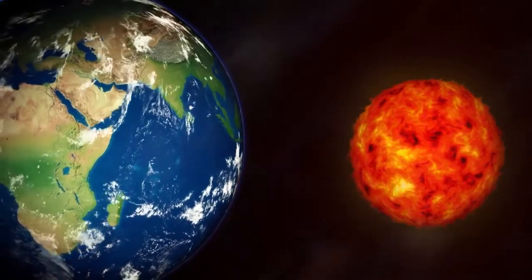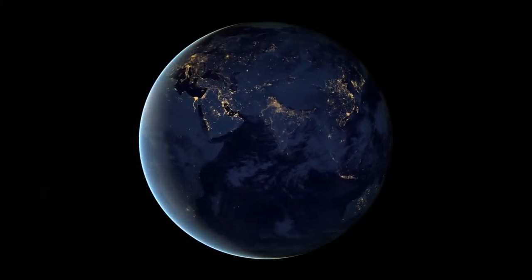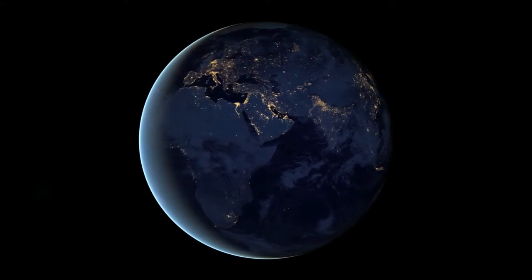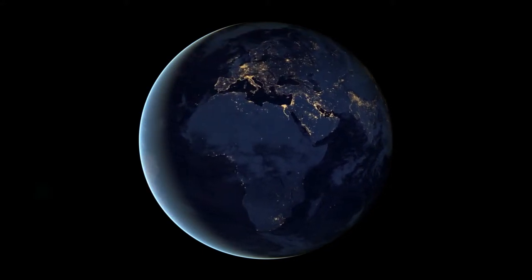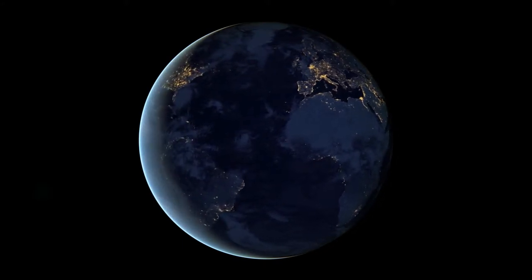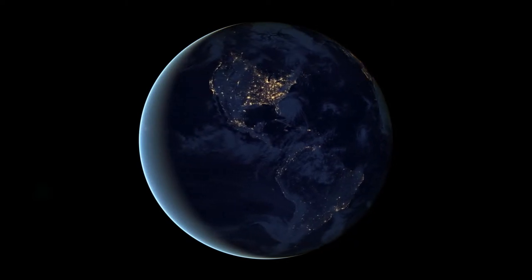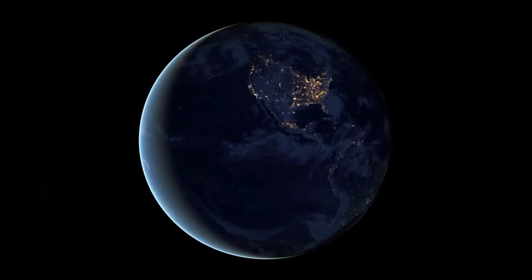Earth's lithosphere is divided into several rigid tectonic plates that migrate across the surface over many millions of years. About 71% of Earth's surface is covered with water, mostly by oceans. The remaining 29% is land consisting of continents and islands that together contain many lakes, rivers, and other sources of water that contribute to the hydrosphere.